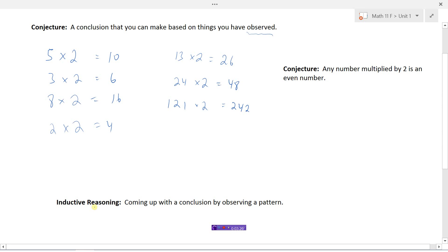So I could use my inductive reasoning because I've seen a pattern here in this city that every Tuesday it rains. So I could make a conjecture every Tuesday in this city it rains.